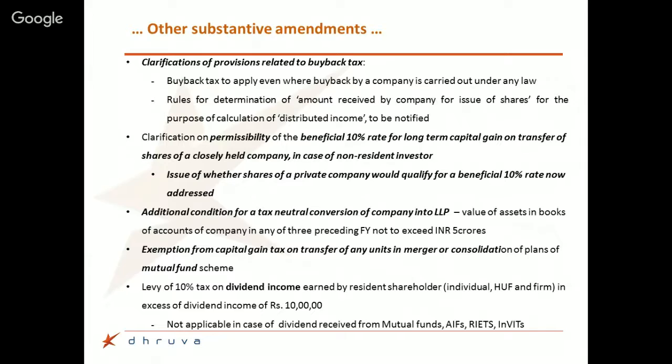One measure that dampened the stock market initially is the levy of 10% tax on dividend income earned by resident individuals, HUFs, and firms when they receive dividends in excess of ₹10 lakhs. In computing this ₹10 lakh threshold, you exclude dividends received from mutual funds, AIFs, REITs, and INVITs — so it effectively targets corporate dividends. Importantly, if a corporate entity is the recipient of dividends, no additional 10% tax applies; this levy only applies when the recipient shareholder is an individual, HUF, or firm and the amount exceeds ₹10 lakhs.